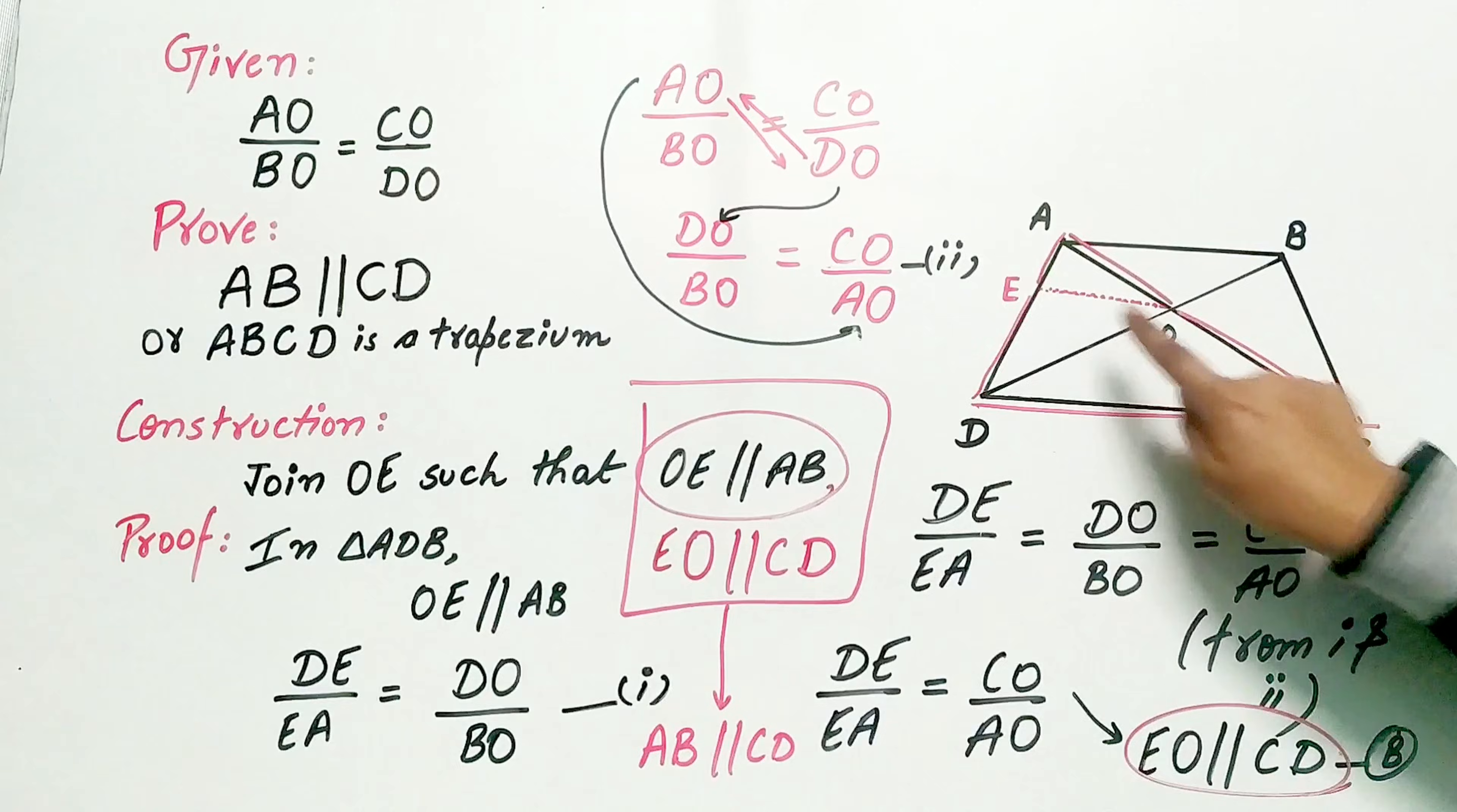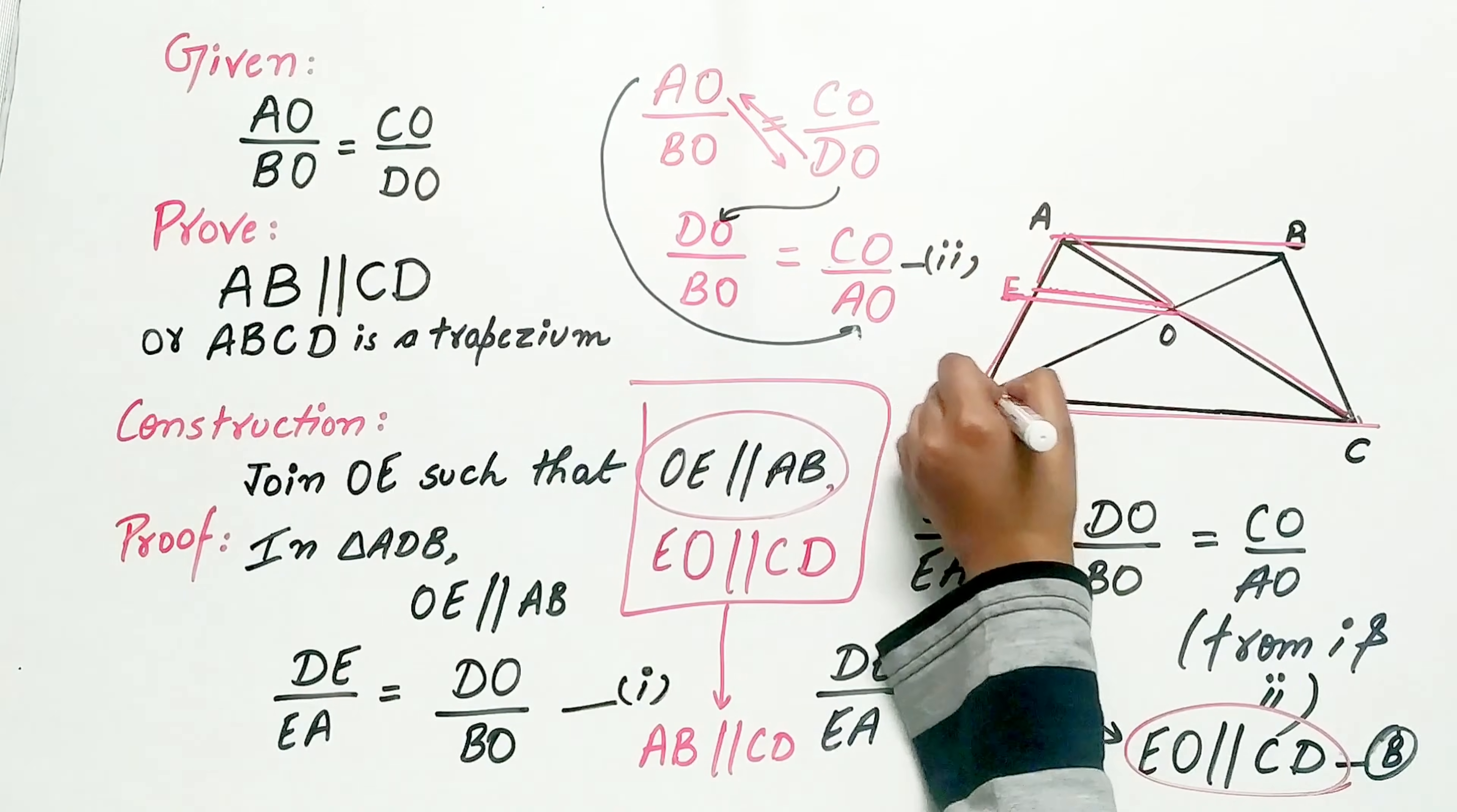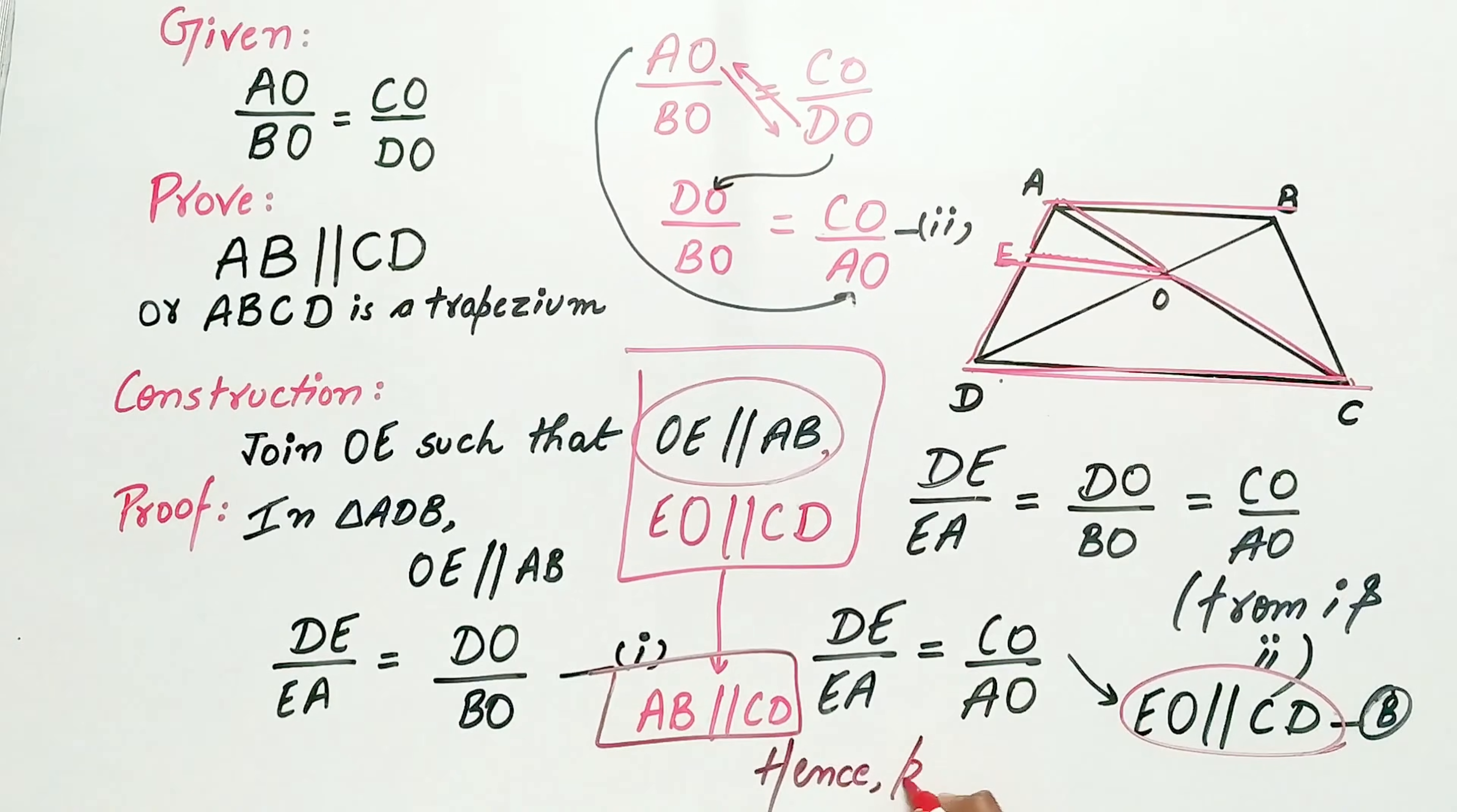Isn't it? Because EO, that means this line, is parallel to AB. EO is also parallel to CD. Hence, AB is parallel to CD. Hence, proved.